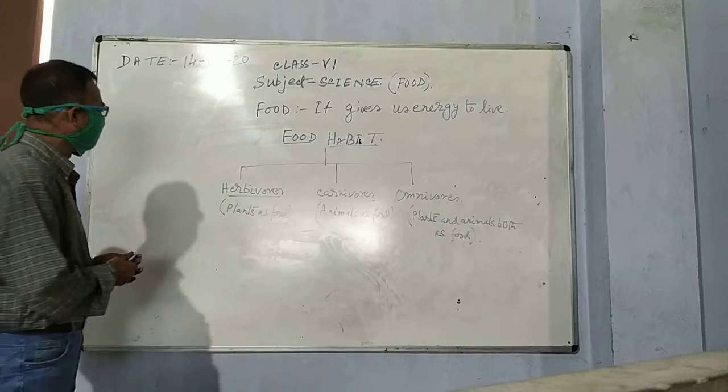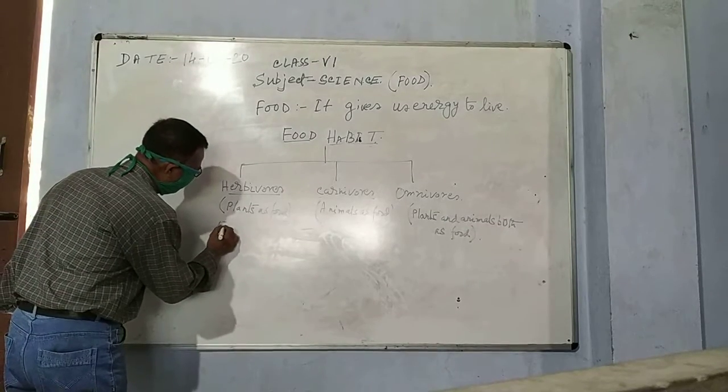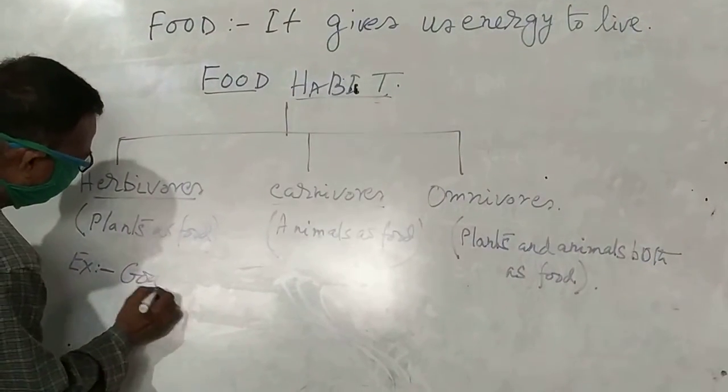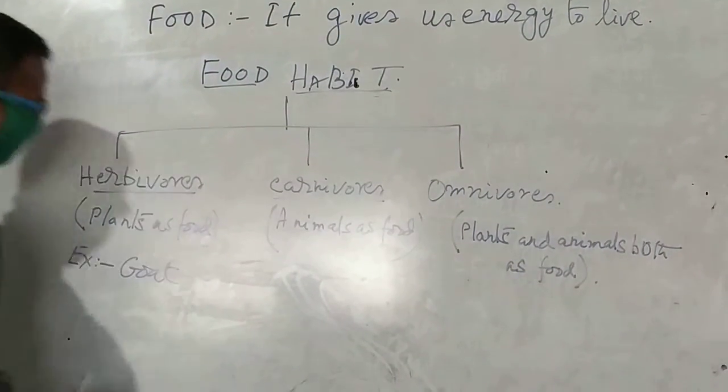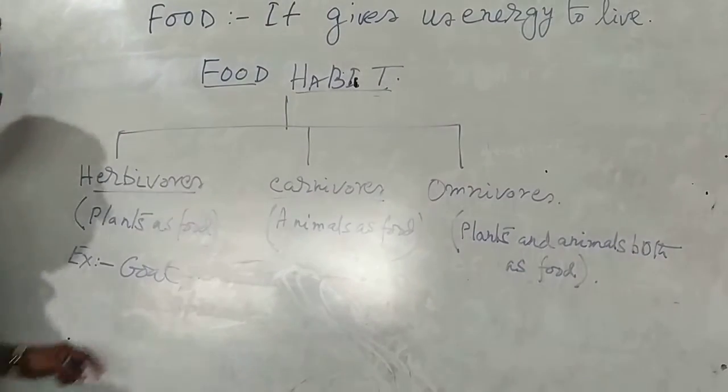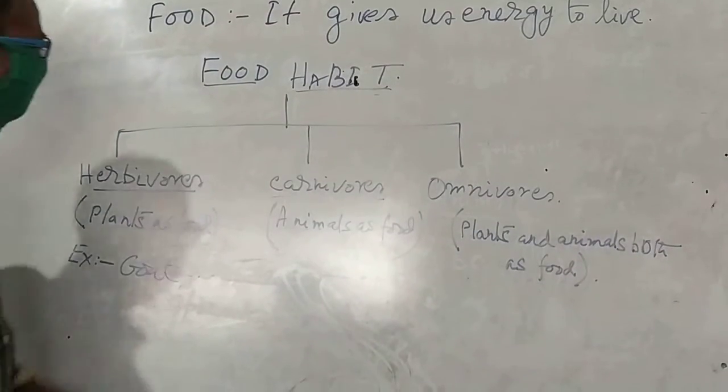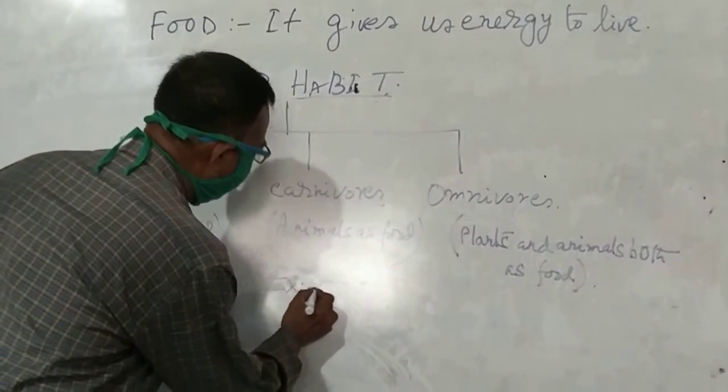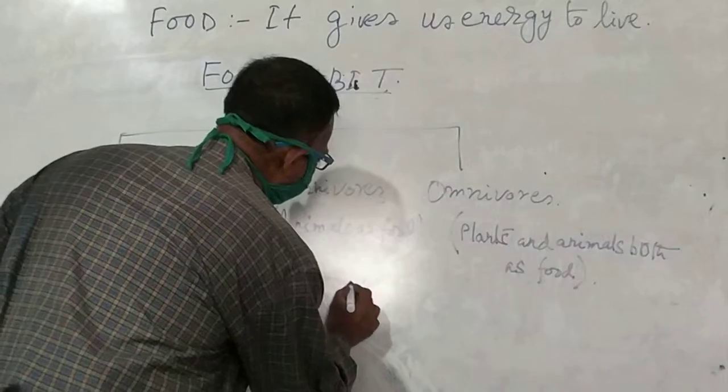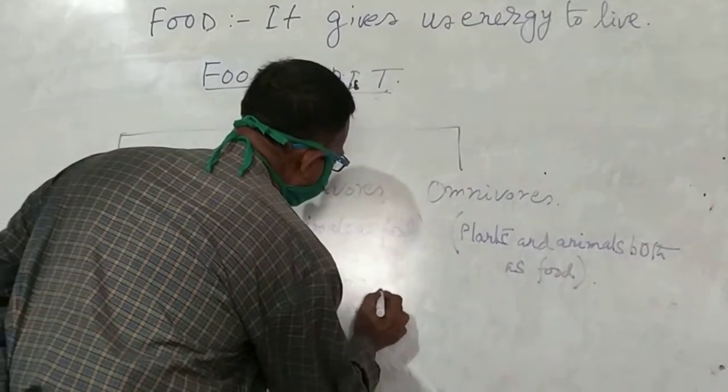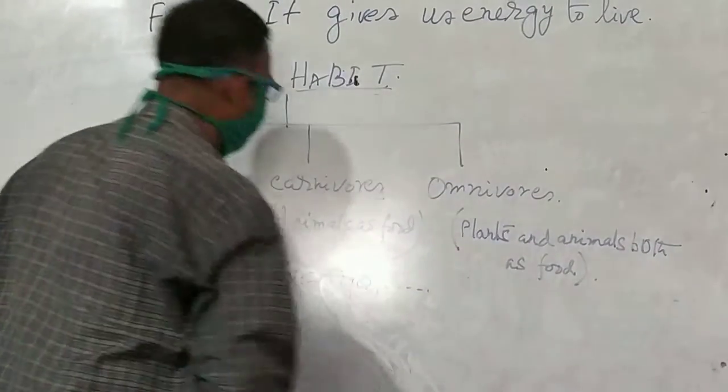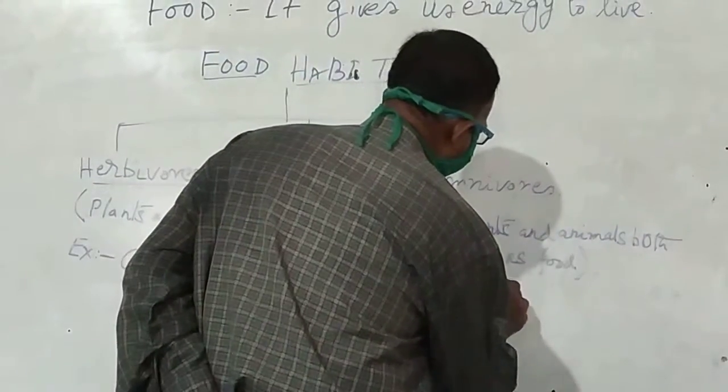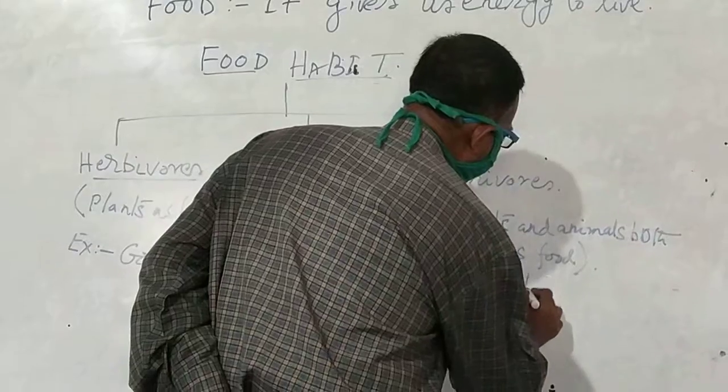I wrote down here one example. One example, goat. Another example should be filled by you. Carnivores, one example is tiger. Another example is filled by you. And omnivores, one example is human.